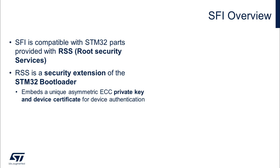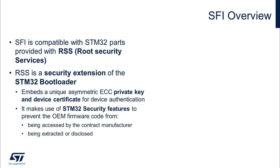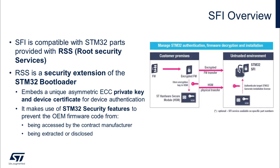RSS is a security expansion of the STM32 system bootloader, and as we will see in more detail in the next section, is responsible for the SFI steps that happen at the device side. RSS embeds a unique asymmetric ECC private key together with the corresponding certificate for device authentication. In addition, it makes use of STM32 security features such as Read Protection, or RDP, to prevent the OEM code from being accessed or extracted by the CM. The image on the right depicts the SFI solution with all the discussed benefits.